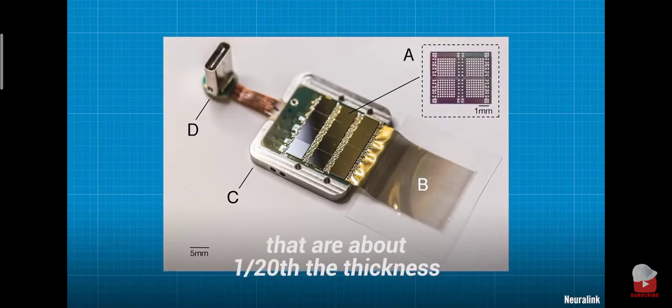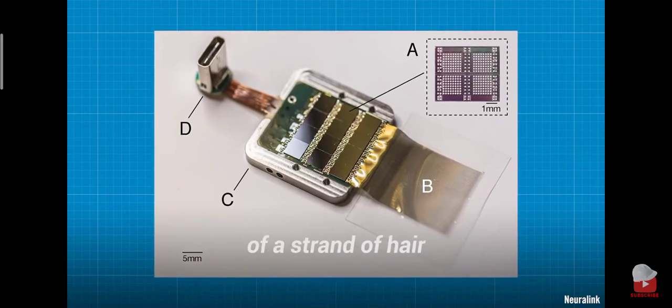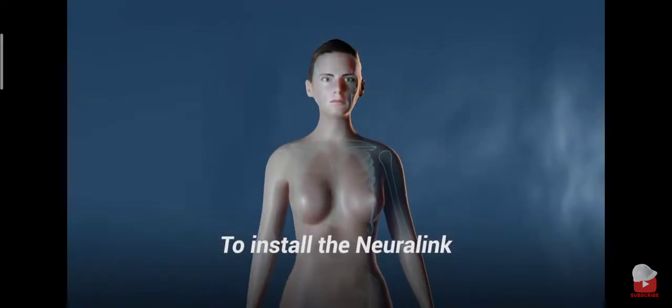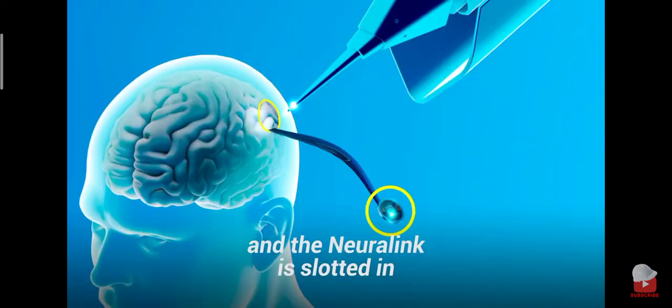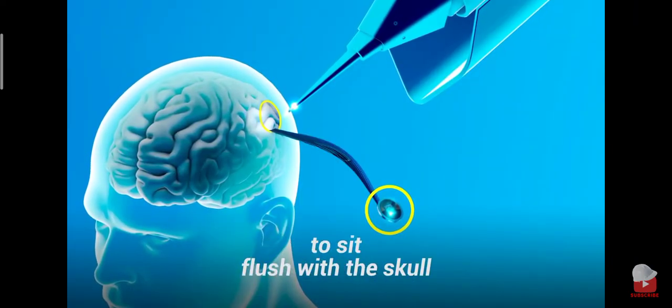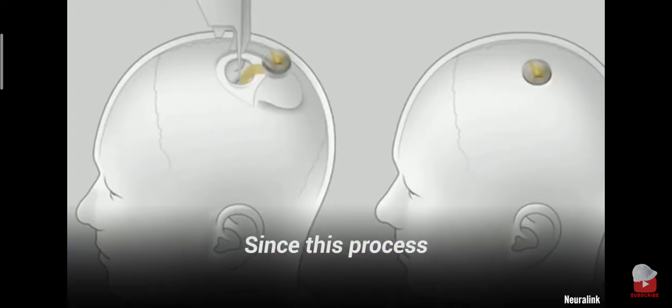It houses electrodes that are about 1/20th the thickness of a strand of hair. To install the Neuralink, a tiny piece of skull is removed and the Neuralink is slotted in to sit flush with the skull.